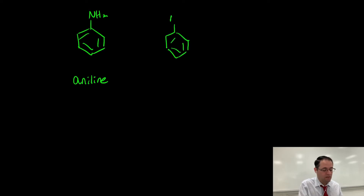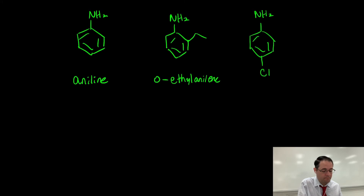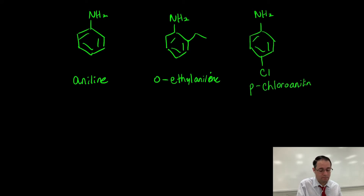So if you have a chlorine group or an ethyl group or something like that, you're going to name these as aniline derivatives. So this is a bit of review. We would call this orthoethylaniline, and we would call the one on the right para-chloroaniline.